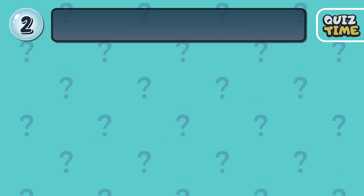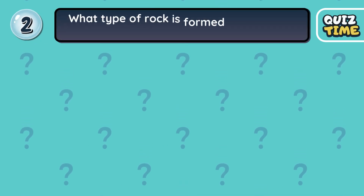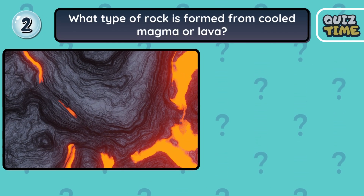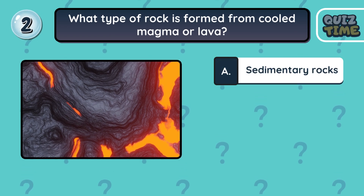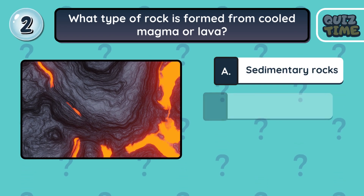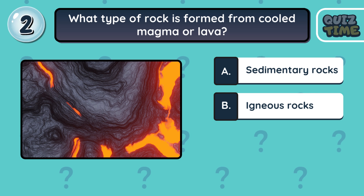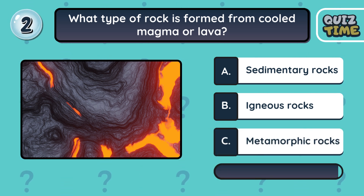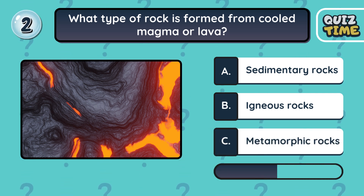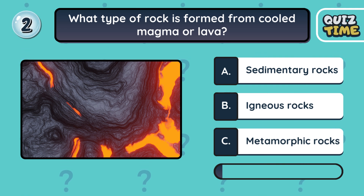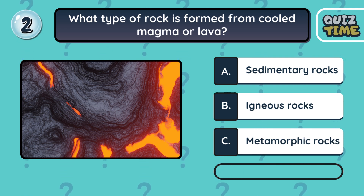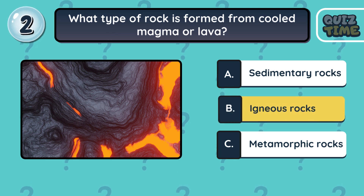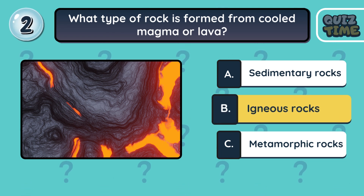Number 2. What type of rock is formed from cooled magma or lava? A. Sedimentary rocks. B. Igneous rocks. C. Metamorphic rocks. The correct answer is B. Igneous rocks.